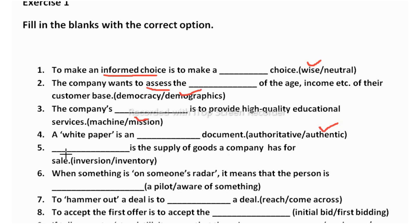The fifth one: blank is the supply of goods a company has for sale — inversion or inventory? Inversion is the reverse of something. Inventory means stock of something. So inventory is the correct answer — it is the supply of goods, meaning stock of items.